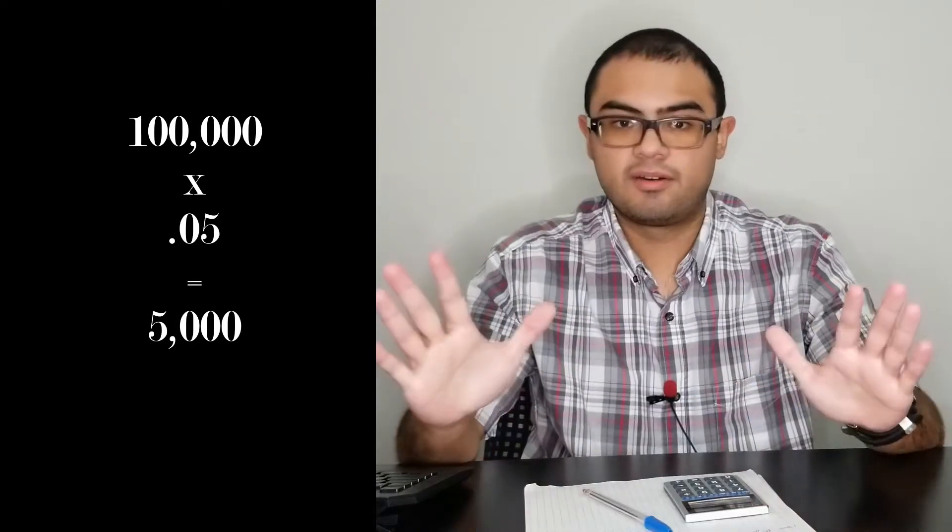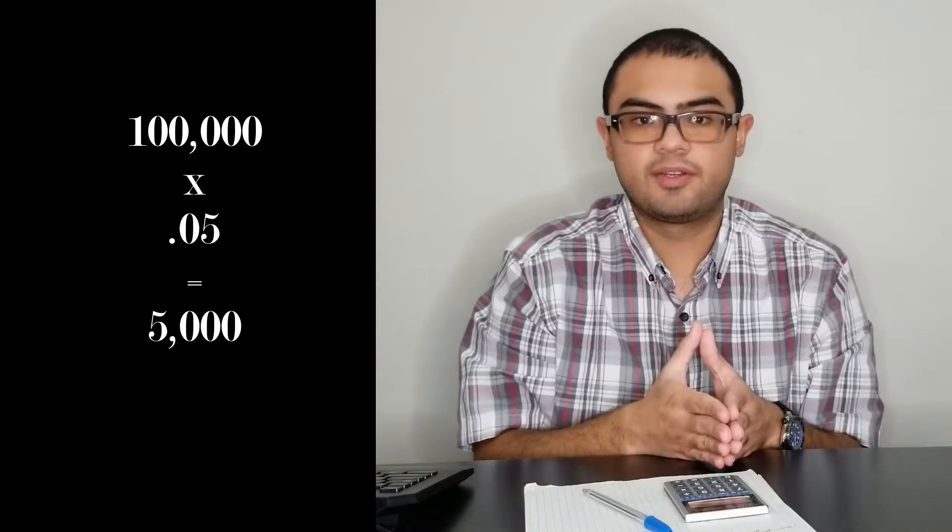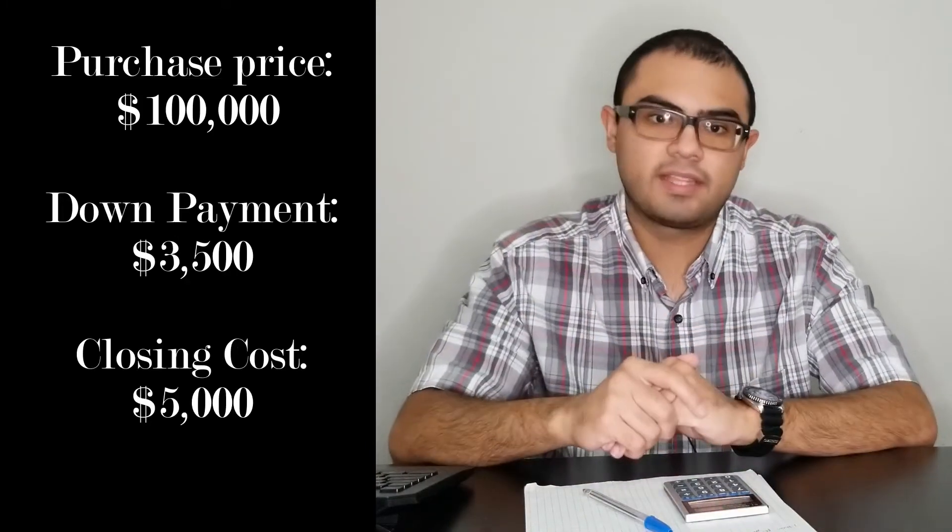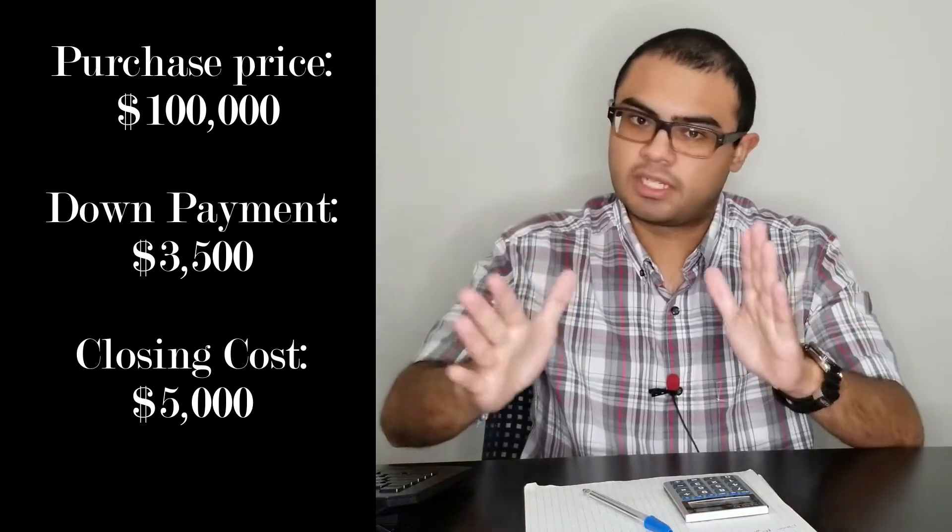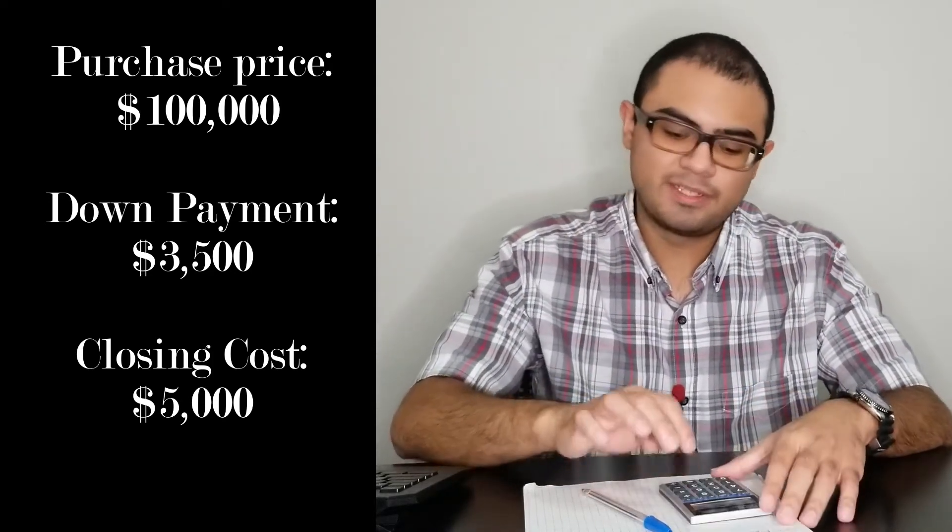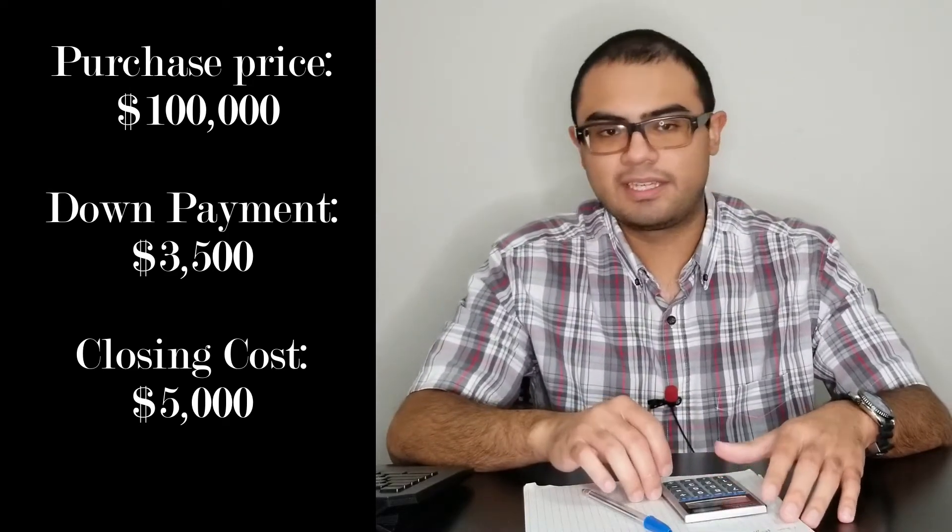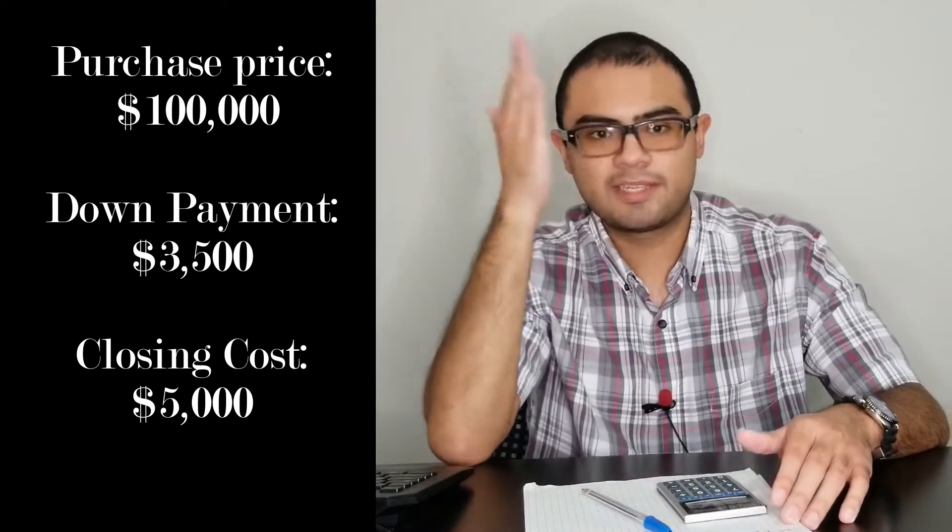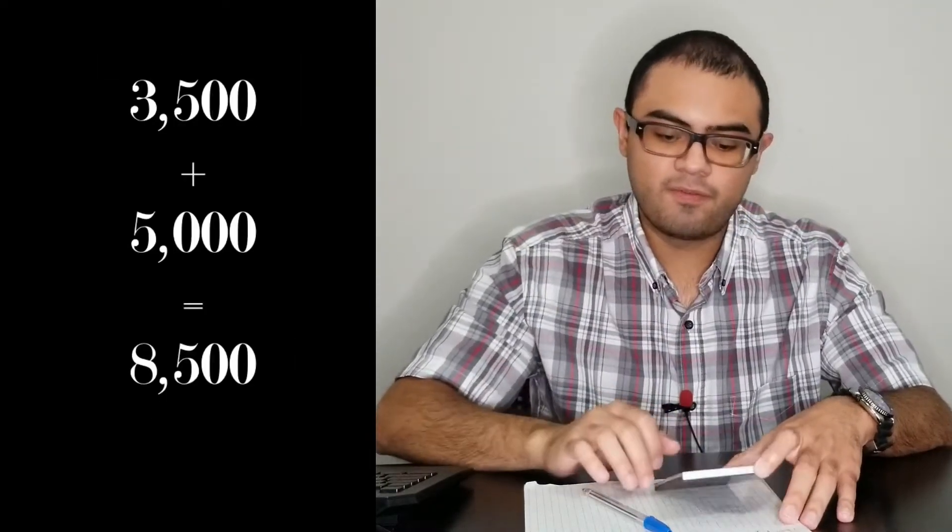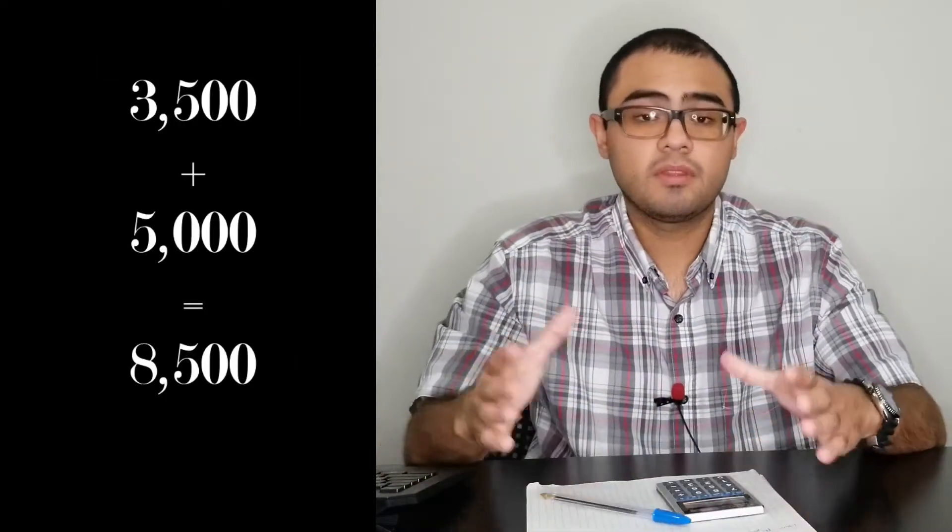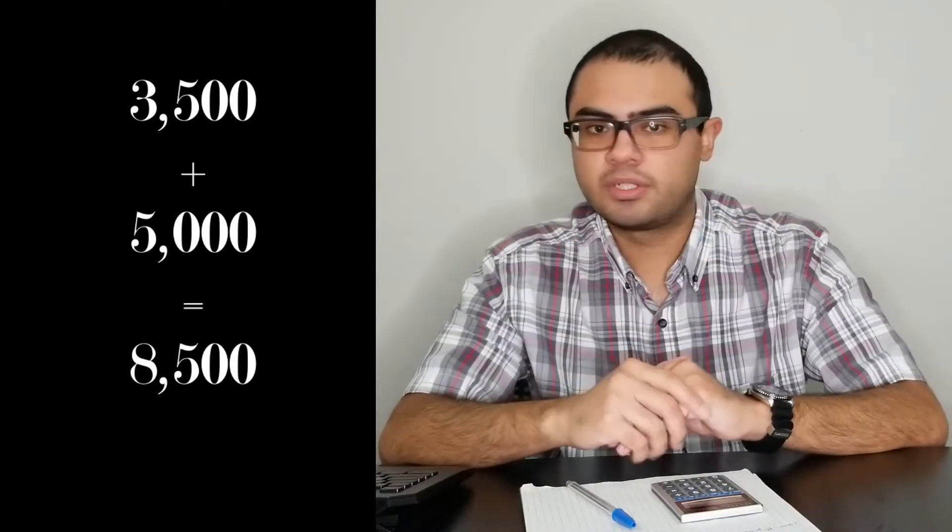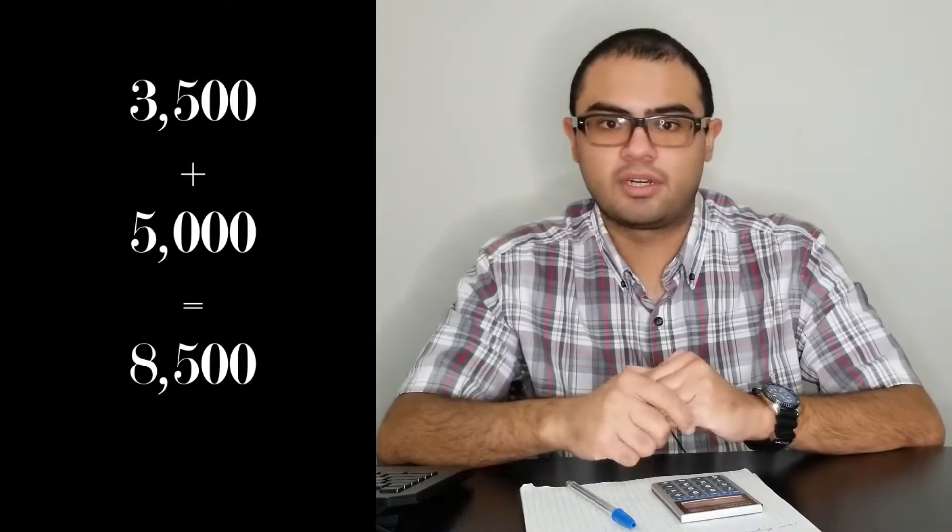That's 5%, so now we got closing costs at $5,000. So now we know that our down payment is $3,500 and our closing costs, 5% of the deal, is about $5,000. We're breaking it down now. Easy numbers right here.